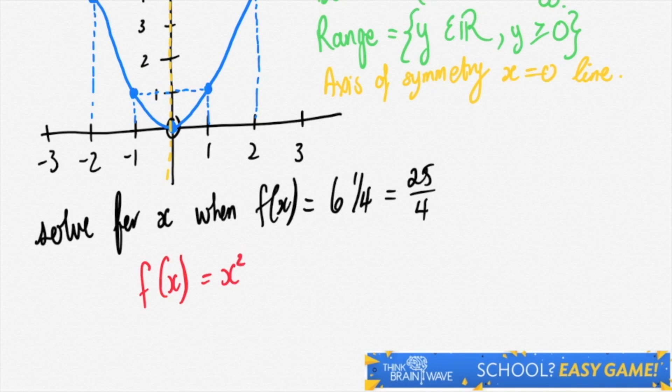f of x equals x squared. Now if we put on the left-hand side 25 over 4, or on the right-hand side as I've done here.